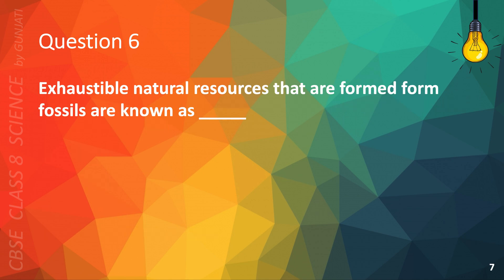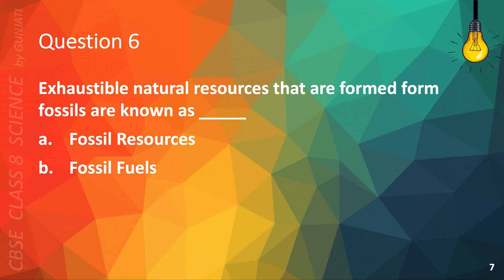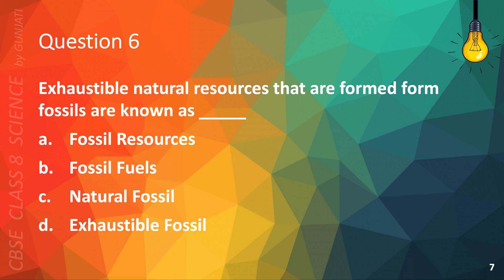Question 6. Exhaustible natural resources that are formed from fossils are known as — A. Fossil resources. B. Fossil fuels. C. Natural fossil. Or D. Exhaustible fossil. The correct answer is B. Fossil fuels.